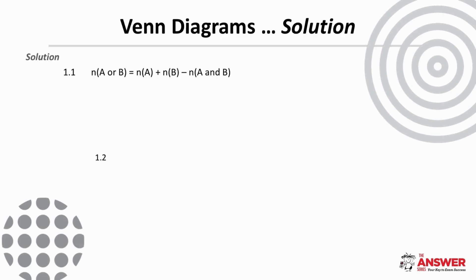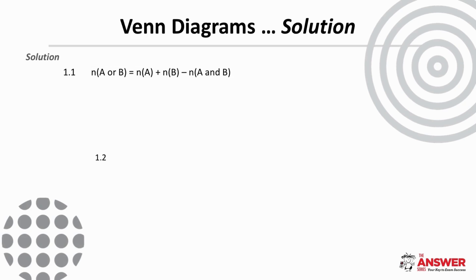To answer this first question we need to use the equation that is true for any two events. We can then make the number of elements in A and B the subject, substitute our given values, and solve.